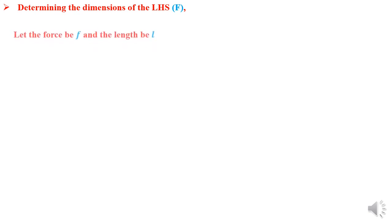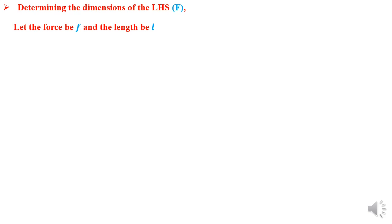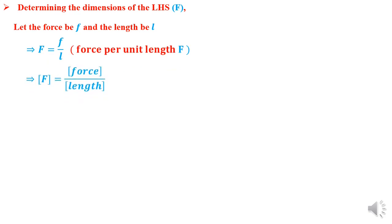Let's now determine the dimensions of the left-hand side of our equation, which is given by capital F. Remember the equation reads: the force per unit length, capital F. We let the force be little f and the length be little l, so capital F equals little f over little l — that is, the force per unit length. Therefore the dimensions of capital F equal the dimensions of force divided by the dimensions of length.